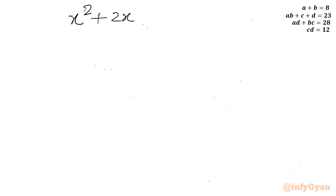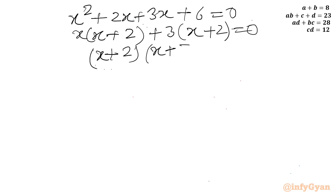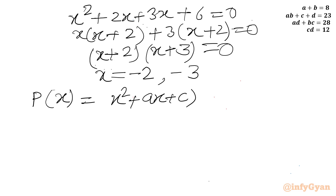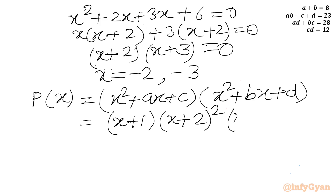Now we can factor it easily: x squared plus 2x plus 3x plus 6 equals 0, so x(x plus 2) plus 3(x plus 2) equals 0, giving (x plus 2)(x plus 3) equals 0. So x equals minus 2 or x equals minus 3. Now I can write the polynomial p(x) as (x plus 1)(x plus 2) squared times (x plus 3), because minus 2 has multiplicity 2.